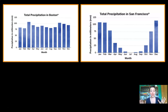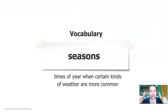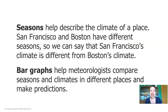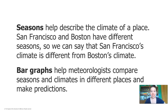That makes sense that Toby would really feel like San Francisco's weather and climate are very different from Boston. We have a new meaning for a word you may already know. Instead of summer, spring, winter, fall, I want to think of seasons as times of year when certain kinds of weather are more common. Seasons help us describe the climate of a place. San Francisco and Boston have different seasons, so we can say that San Francisco's climate is different from Boston's climate. Bar graphs help meteorologists compare seasons and climates in different places and make predictions — which is what meteorology is all about.